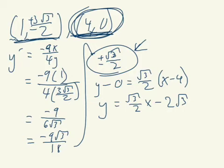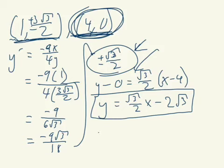And the other one, as I said, if we put a negative in there, it would just make it negative √3 over 2 x. And it would be plus 2√3. And so those are two solutions.